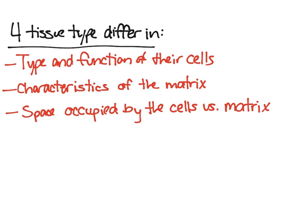The space occupied by cells versus the matrix also differs between tissue types. For example, some tissues have more cells while others have more matrix. In connective tissue, the matrix occupies a lot more space than the cells. Connective tissue is the most complex and is broken down into many subcategories, which we'll cover in future videos.